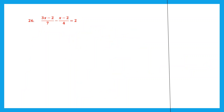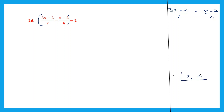Question 26. So let's work out what's on the left hand side first. We have 3x minus 2 divided by 7, minus x minus 2 divided by 4. This is subtraction of fractions. We have to find the LCM of the denominators 7 and 4. Let's begin with 7. 7 1s are 7, then 4. This time I take 2. 2 2s are 4, continue with 2. 1 and 1.